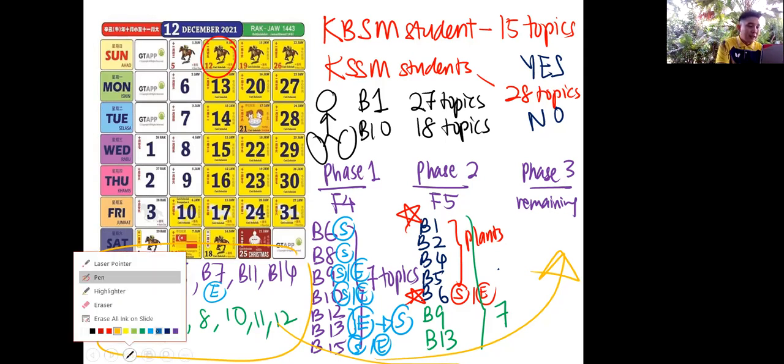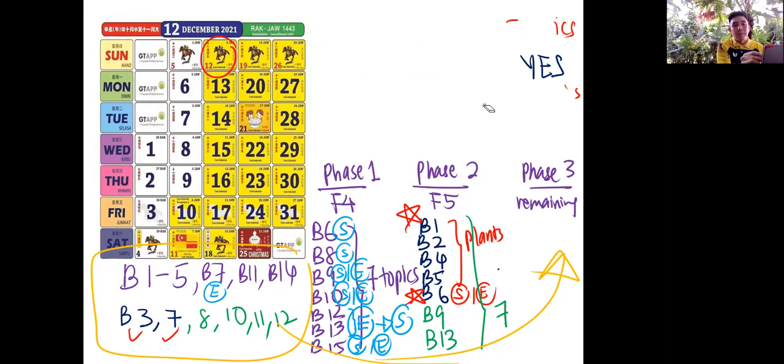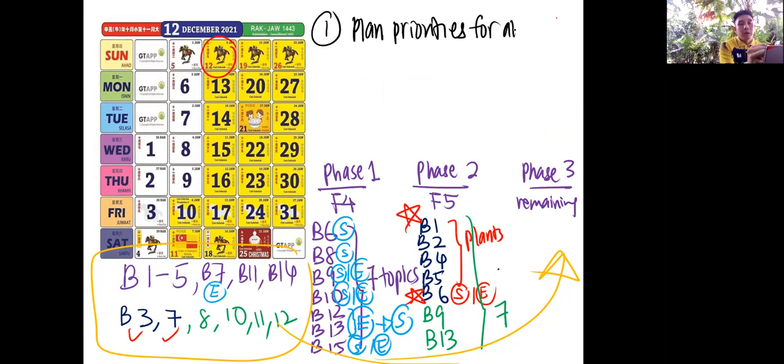So then how about the rest of the topics? All this here should be in phase three. All this here should be in phase three.